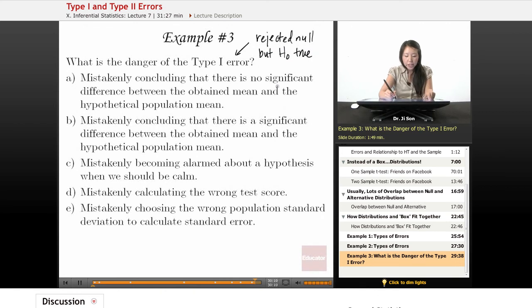So mistakenly concluding that there's no significant difference, well, that's not true because you concluded that there's a significant difference. That's why you rejected the null.